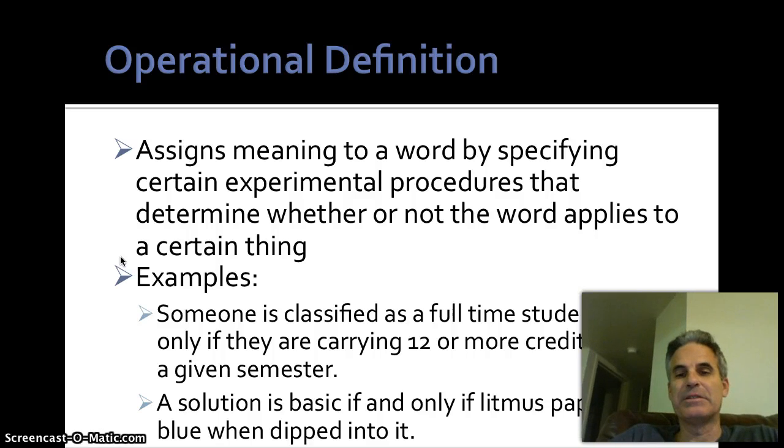Something belongs to this if and only if we apply this test and something happens. Alright, examples. Someone is classified as a full-time student if and only if they are carrying 12 or more credit hours in a given semester. So again, full-time generally means they're doing it all the time. It depends on what those 12 credit hours are in, obviously, whether they really are a full-time student. Solution is basic if and only if litmus paper turns blue when dipped into it. Obviously, it would have to be red first. So again, this is an operational definition. To be basic is to have a certain chemical composition, so it's suggesting a test.